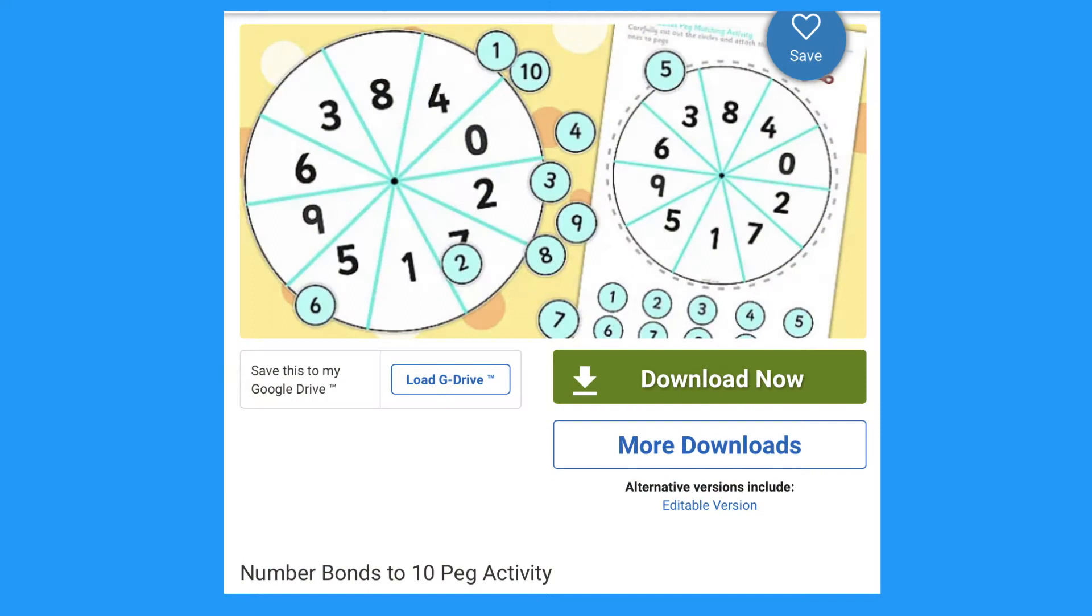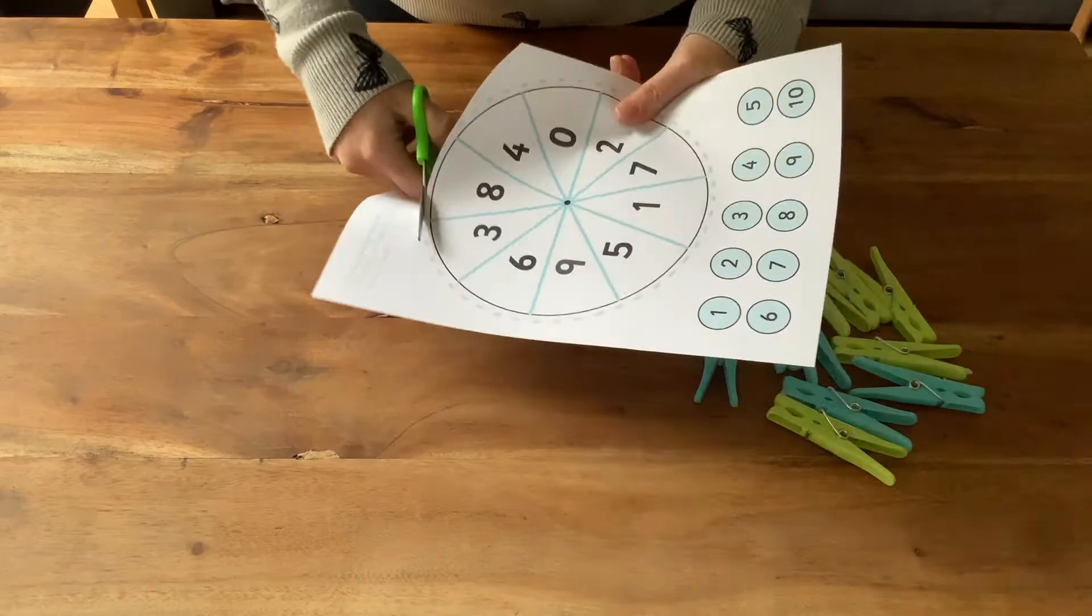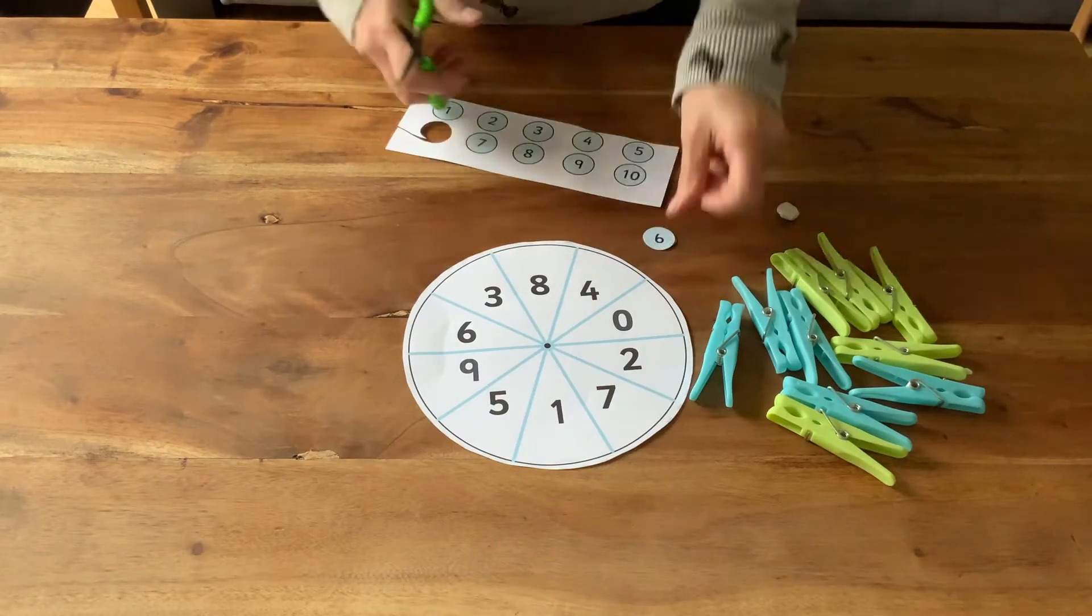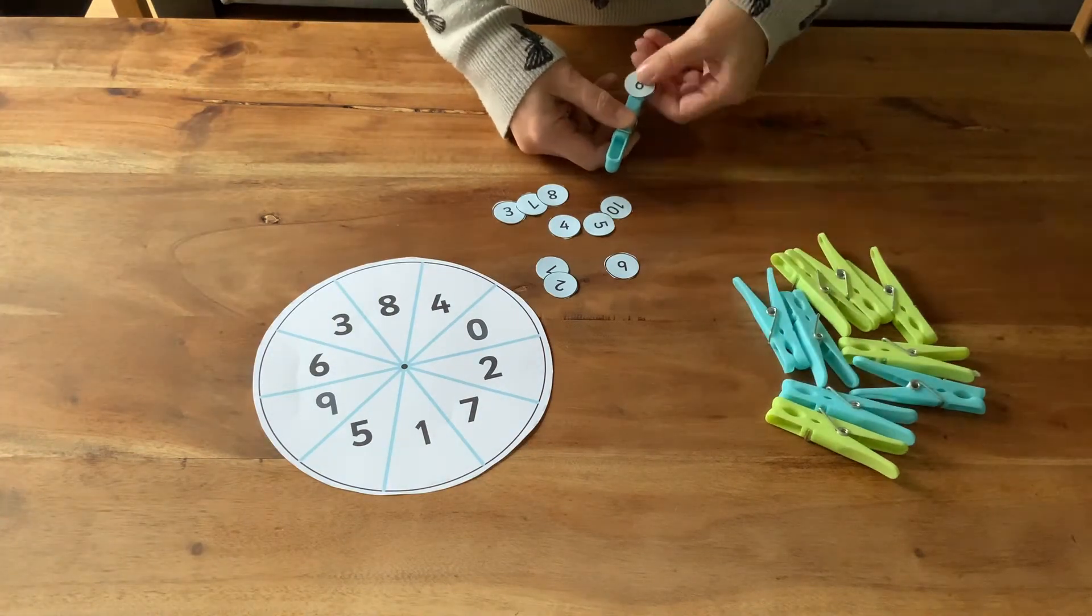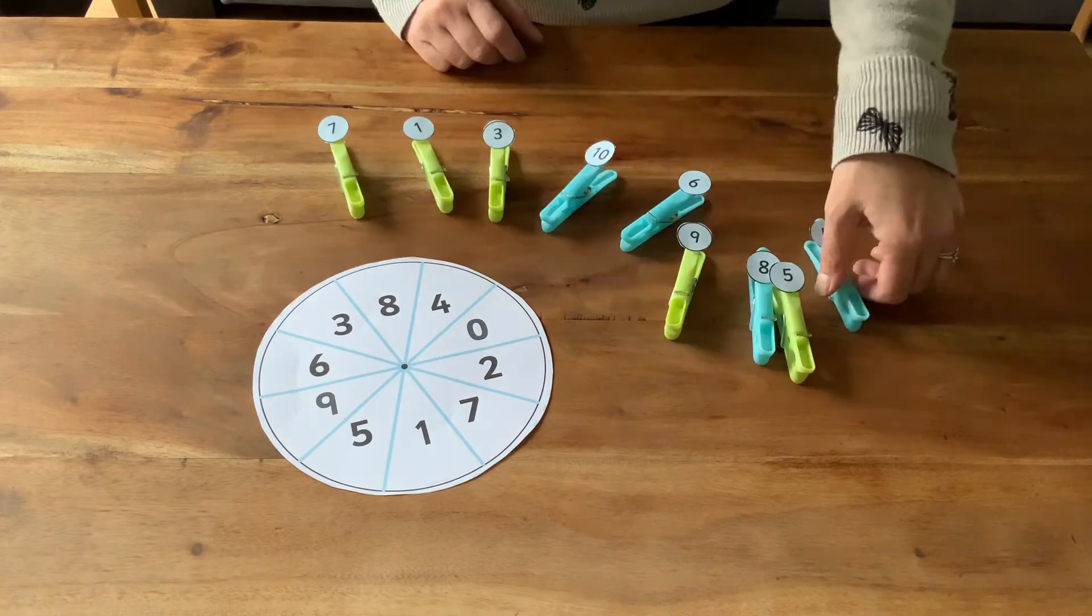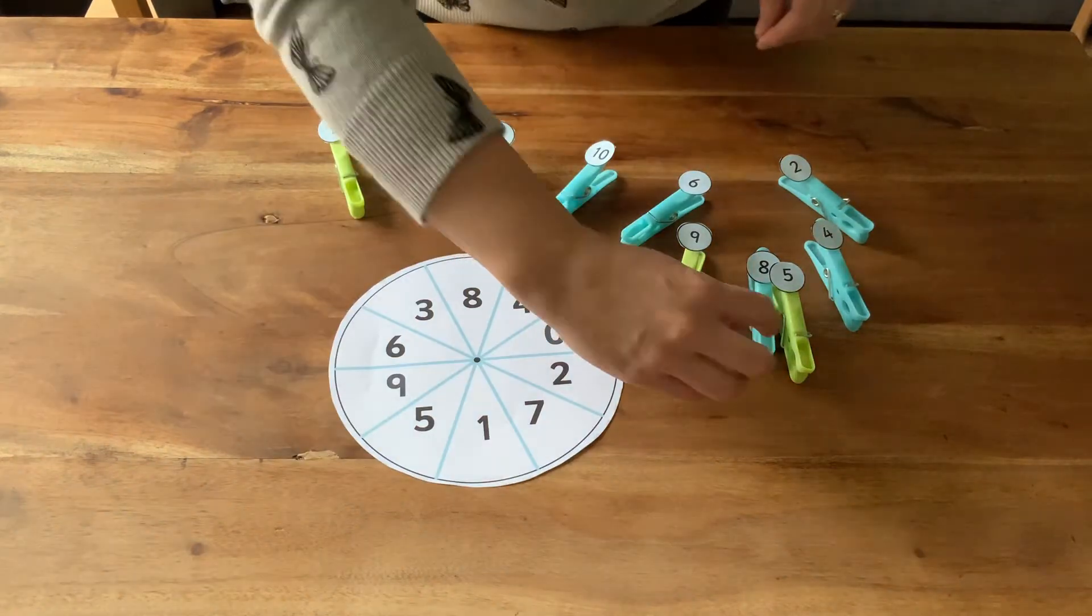Let's look at this Bonds to 10 peg activity. First cut out the large wheel and the small number discs. Now attach one number to each peg using sticky tack or glue dots. Children can choose a peg and look at its number.